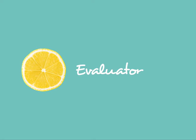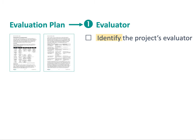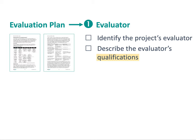Let's take a deeper look into the evaluator section of an evaluation plan. NSF likes to see a specific evaluator who has committed to working on the project named in the proposal. If you're unable to identify your evaluator in your proposal, state why you cannot select an evaluator and your plan for finding one when the grant is funded. Then briefly describe the evaluator's qualifications and how those qualifications match with the evaluation plan for your project. For example, if you have a highly quantitative evaluation plan, the evaluator needs to show experience in quantitative evaluation.